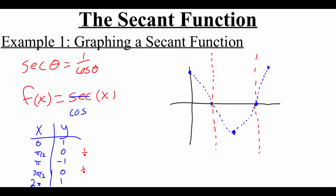For the other values: 1 flipped over is still 1/1, so that doesn't change. Negative 1 flipped is still −1. And positive 1 stays positive 1. So these points aren't actually changing.